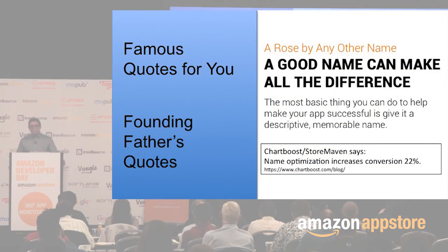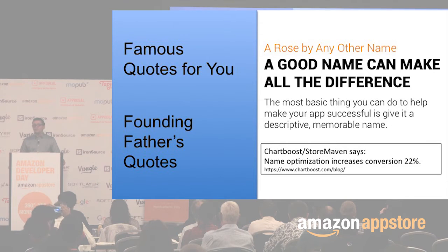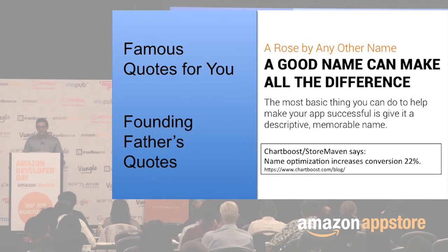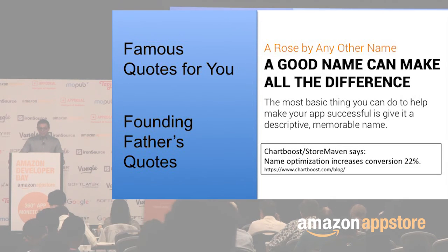That starts with a name. Even the name you choose is critical to your success. Be descriptive — 'Goat Simulator' kind of says everything you need to know right there. You want to avoid overly common words like 'book list' or 'quotes.' Remember that your potential users may be coming from search results, and you don't want to be just one result among hundreds. On the Amazon App Store, we've seen games and apps significantly improve their downloads with simple optimizations to their name.